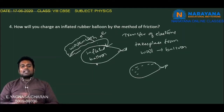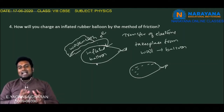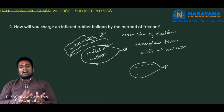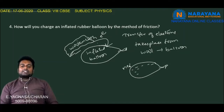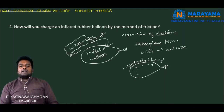By the method of friction, we rub the inflated balloon with a woolen cloth. The electrons present on the woolen cloth are transferred to the inflated balloon, so the surface of the balloon becomes completely negatively charged.